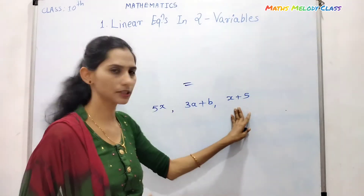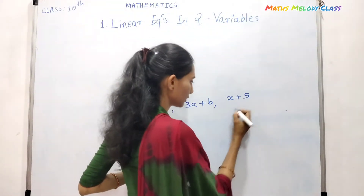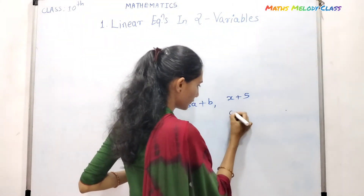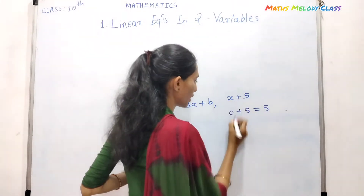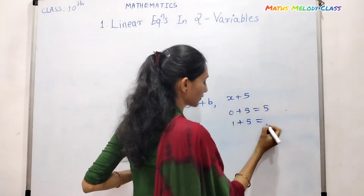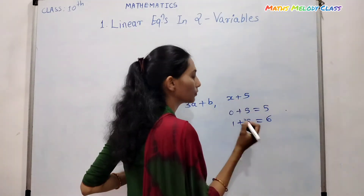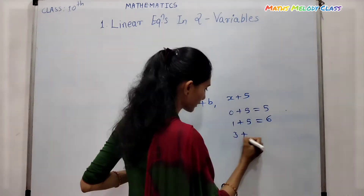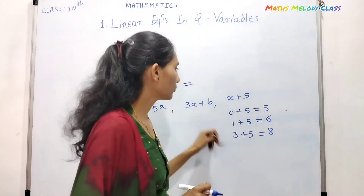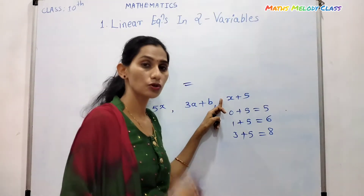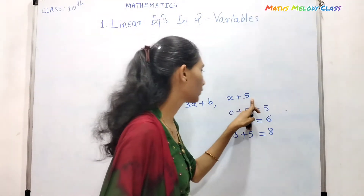Consider the expression x plus 5. If I put x equal to 0, then I get 0 plus 5 equals 5. If I put x equal to 1, then 1 plus 5 equals 6. If I put x equal to 3, then 3 plus 5 equals 8. As the value of x changes, so will the value of the expression x plus 5 change.